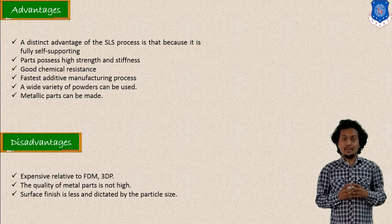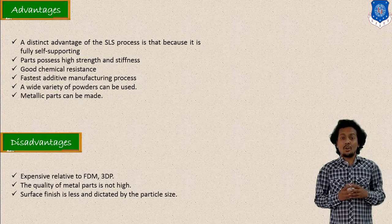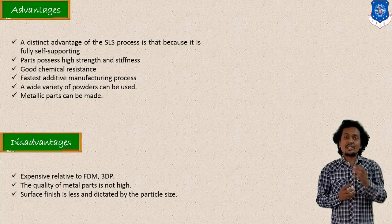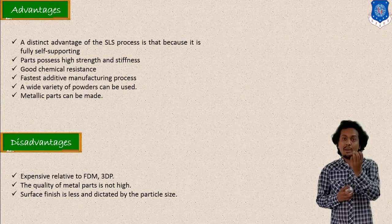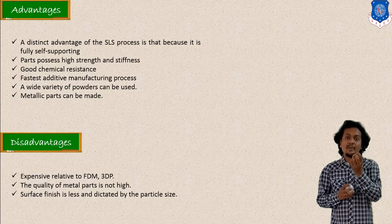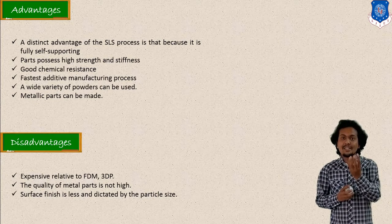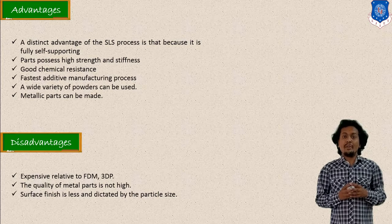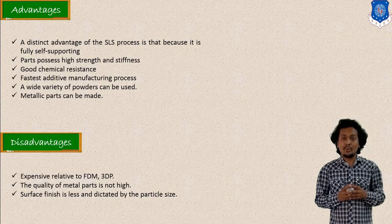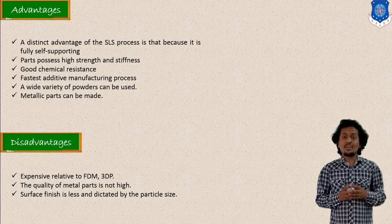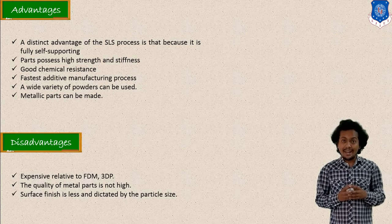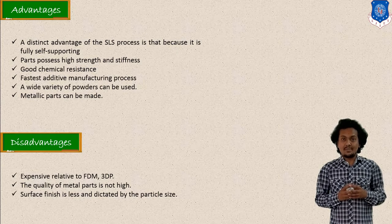Here I have mentioned various advantages as well as limitations for this process. The main advantage is that this process is self-supporting — extra supports are not required for part building because powder itself is a self-supporting material and can hold its own shape. This process is a little expensive compared to the FDM technique — Fused Deposition Modeling — and 3D printing. Surface finish, accuracy, and quality of the material are also important factors to consider before choosing your process for rapid prototyping.